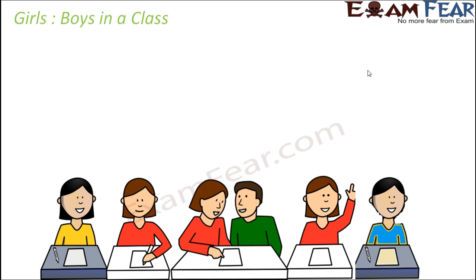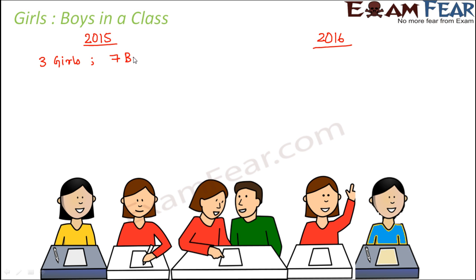Let's look at another example to understand the concept of comparison by division. We are trying to compare the number of girls to the number of boys in a class. In 2015, it was found that there were three girls and seven boys in the class, so there were 10 students in total.